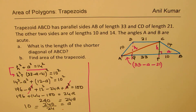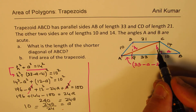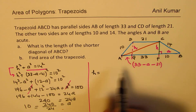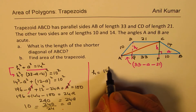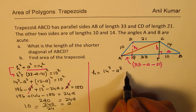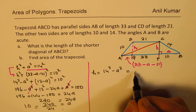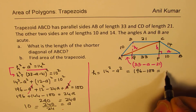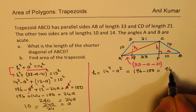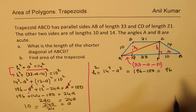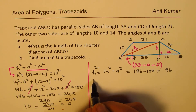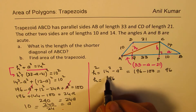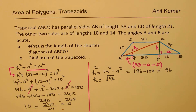Now we can find the height H. H² = 14² − A² = 196 − 100 = 96. So H = √96.